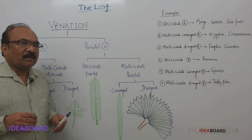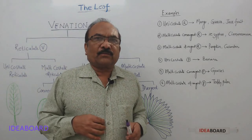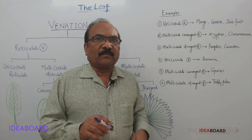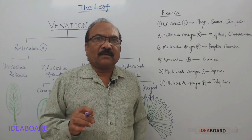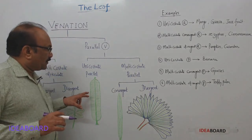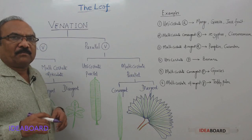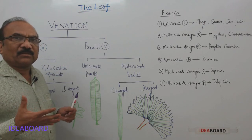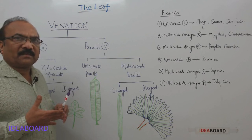Xylem is a dead conducting tissue and is a water-conducting tissue, whereas phloem is a living tissue and is a food-conducting tissue. That is why these veins not only help in conduction,